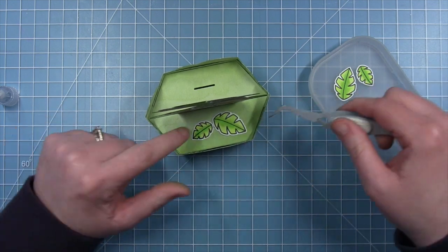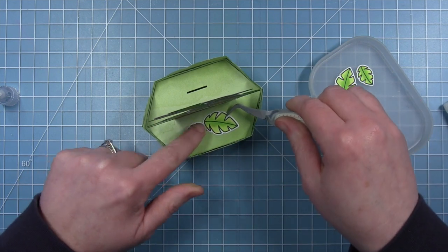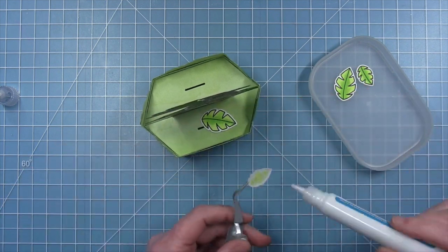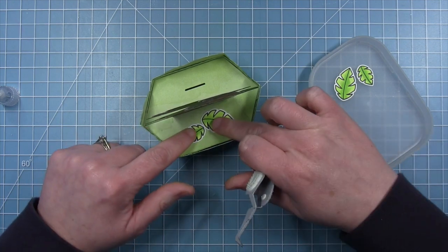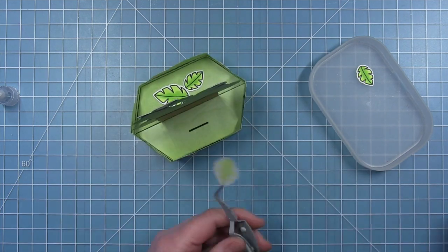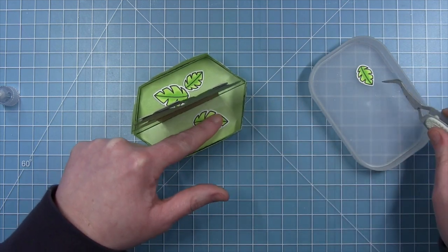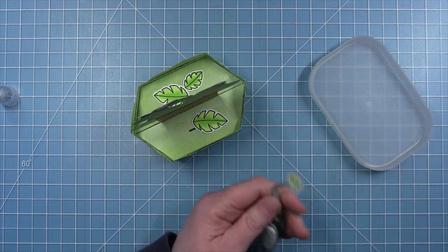And then to cover up the two slots that I didn't end up using, I cut some of these leaves. They're also from Critters in the Jungle. There's a big one and a small one. And I just decided to lay those down like they're on the ground and they cover up that slot perfectly. But also decorate that kind of flat area that's down inside the box.